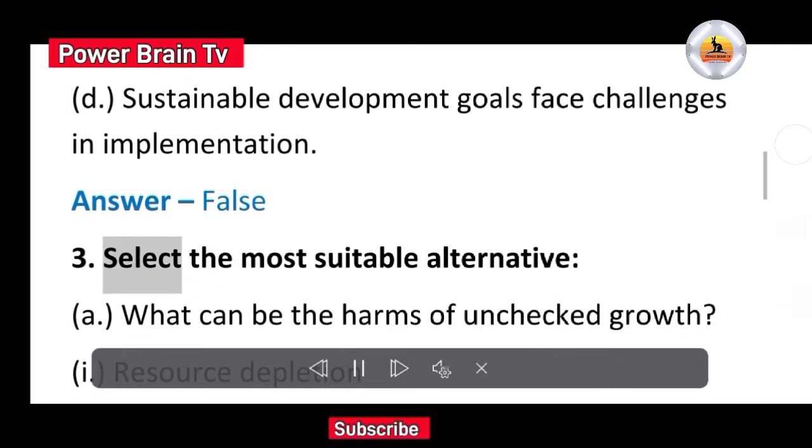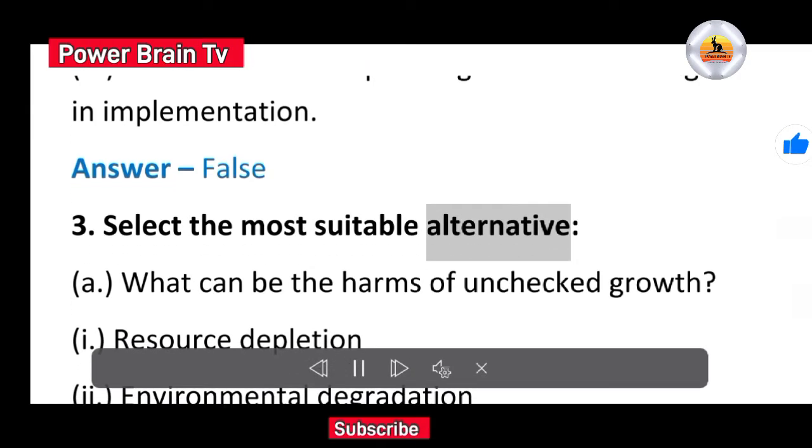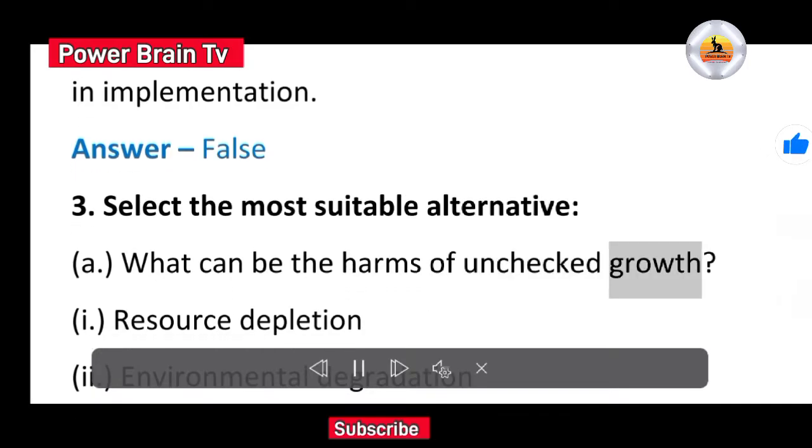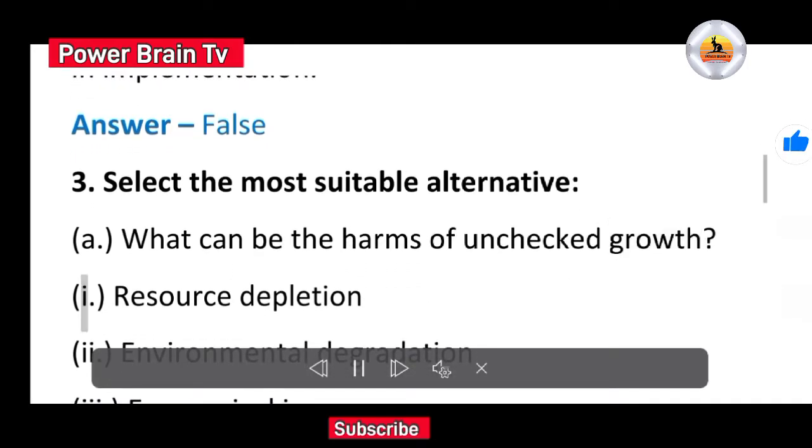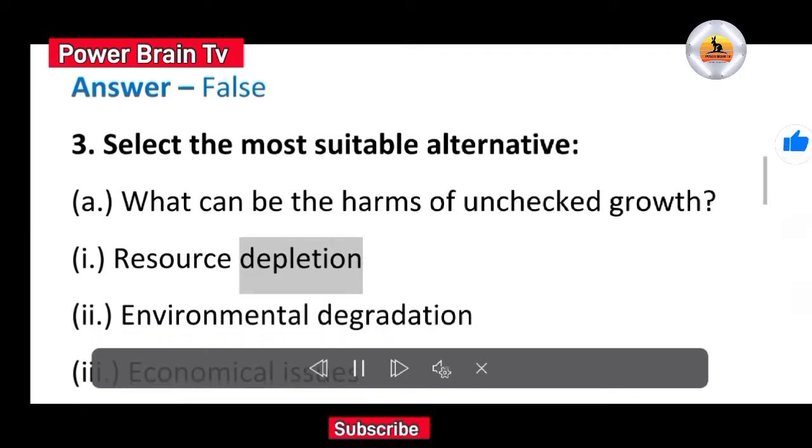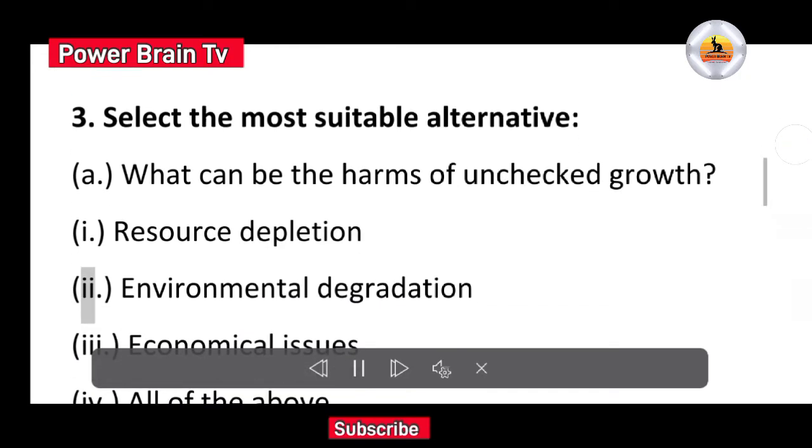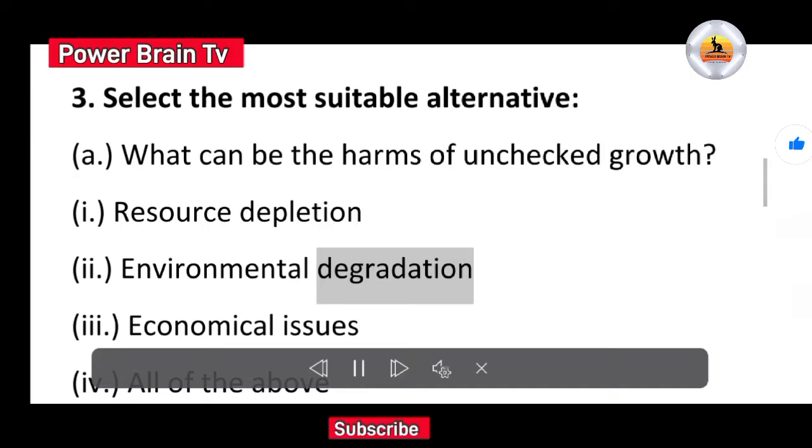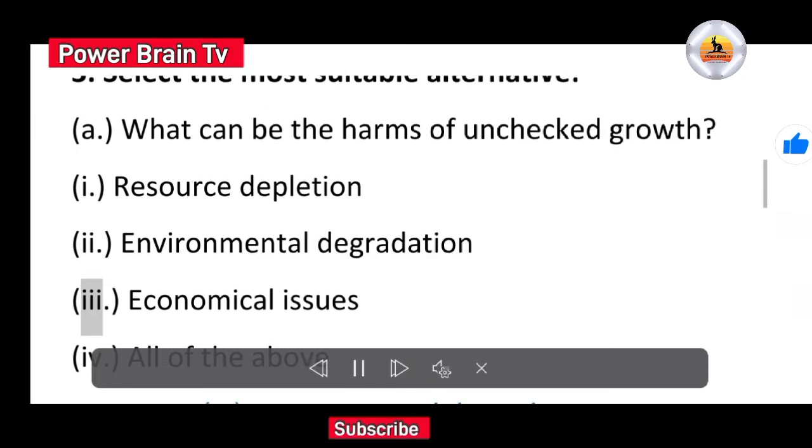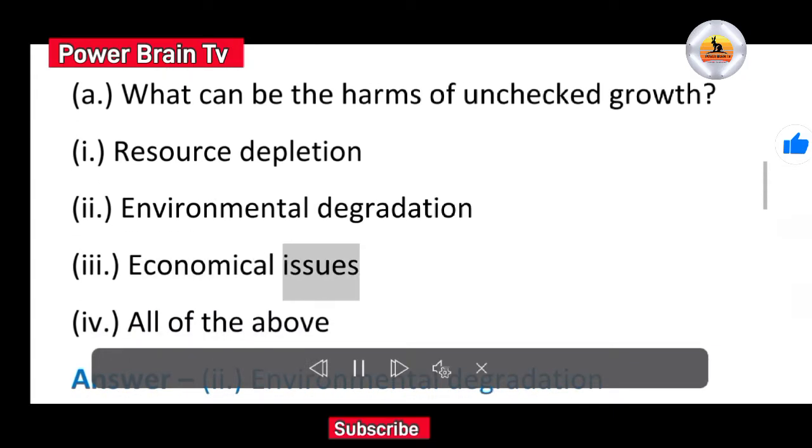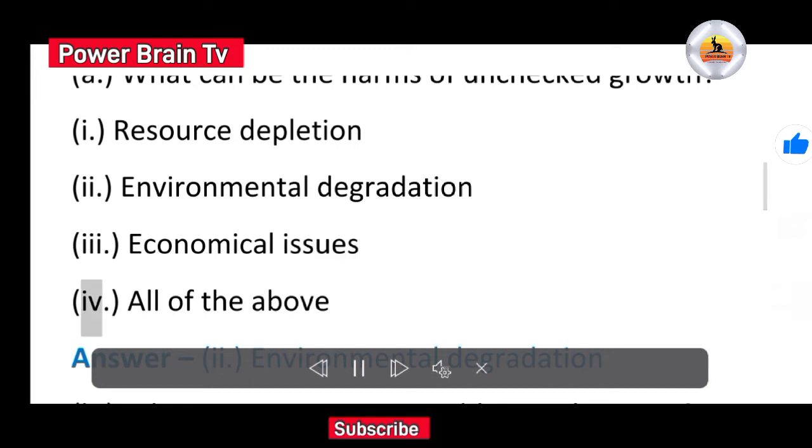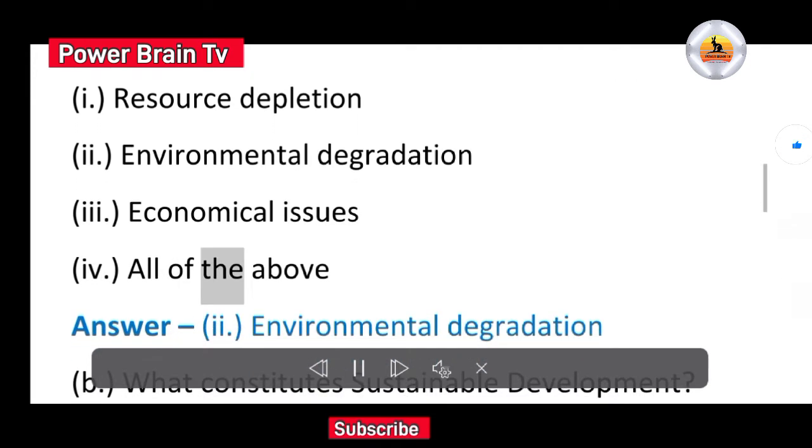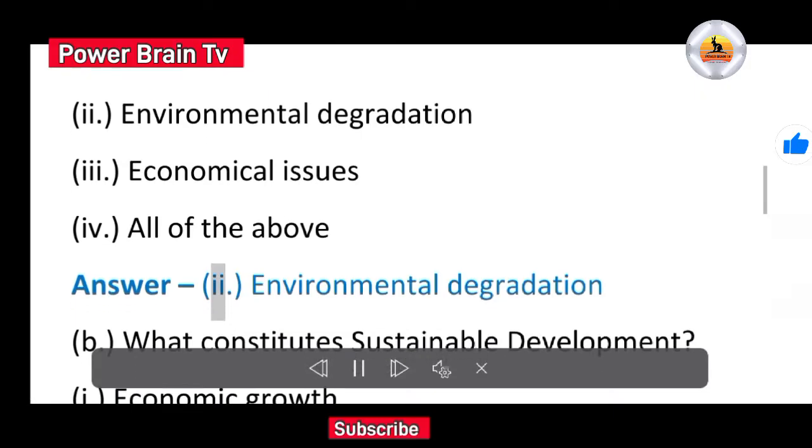3. Select the most suitable alternative. A. What can be the harms of unchecked growth? I. Resource depletion. II. Environmental degradation. III. Economical issues. IV. All of the above. Answer II. Environmental degradation.